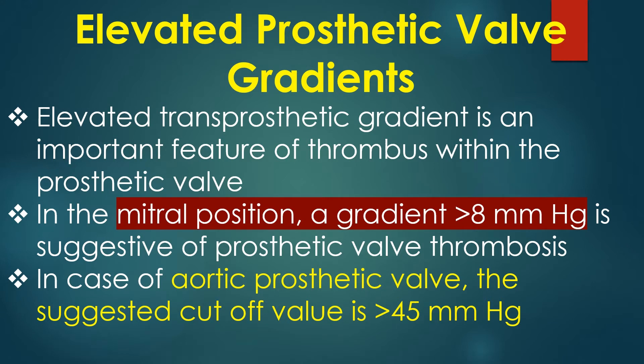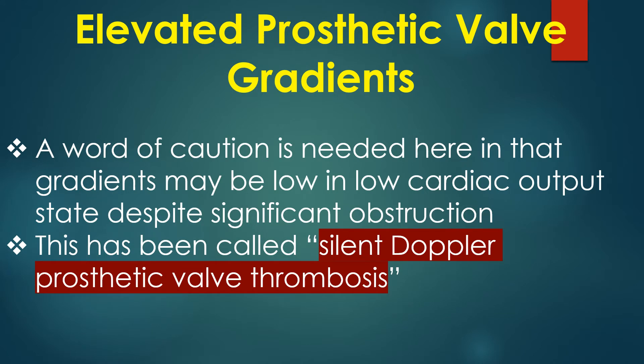Elevated trans-prosthetic gradient is an important feature of thrombus within the prosthetic valve. In the mitral position, a gradient more than 8 mmHg is suggestive of prosthetic valve thrombosis. In the case of aortic prosthetic valve, the suggested cut-off value is more than 45 mmHg. A word of caution: gradients may be low in low output state despite significant obstruction — this has been called silent Doppler prosthetic valve thrombosis.